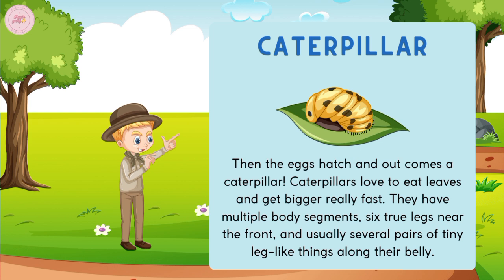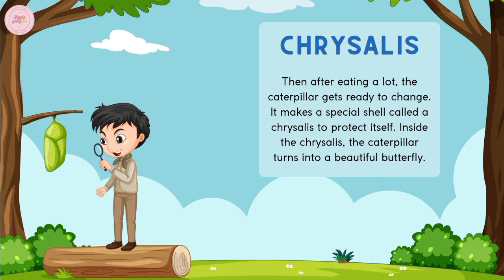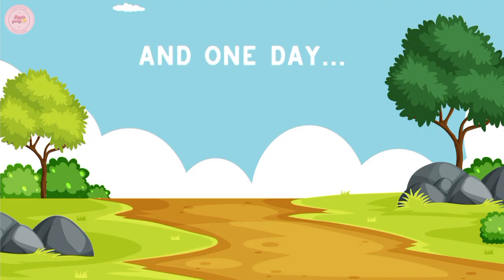Then after eating a lot, the caterpillar gets ready to change. It makes a special shell called a chrysalis to protect itself. Inside the chrysalis, the caterpillar turns into a beautiful butterfly.